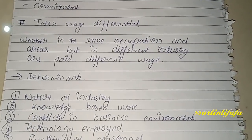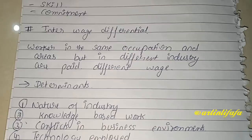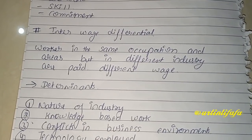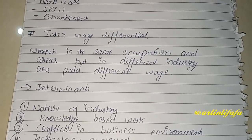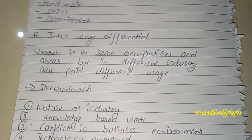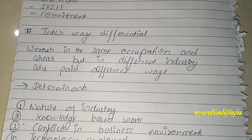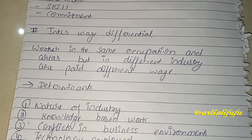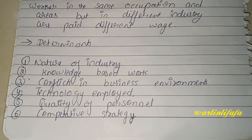Next topic ہے inter and intra wage differential — یہ بتاتا ہے کہ ہم کیسے wage کو maintain کرتے ہیں۔ Inter wage differential میں دیکھتے ہیں: workers in the same occupation and area but in different industries are paid different wages۔ دو organizations ہیں، same level کا کام ہو رہا ہے لیکن جو wage مل رہا ہے وہ الگ الگ ہے۔ اس کے کچھ determinants ہیں — سب سے پہلے nature of industry۔